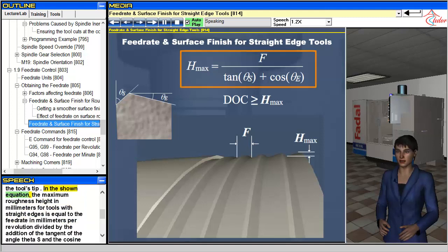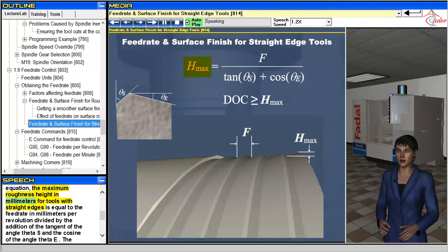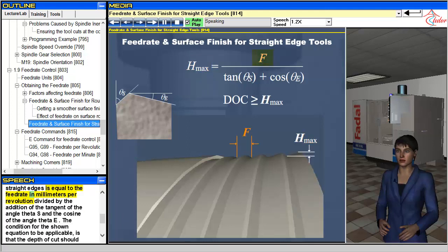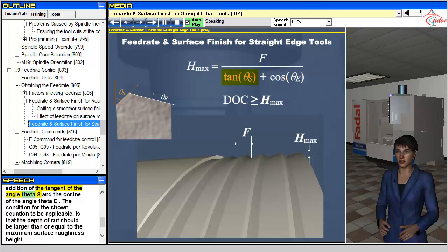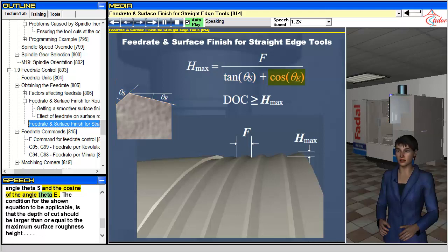In the shown equation, the maximum roughness height in millimeters for tools with straight edges is equal to the feed rate in millimeters per revolution, divided by the addition of the tangent of the angle theta S and the cosine of the angle theta E.